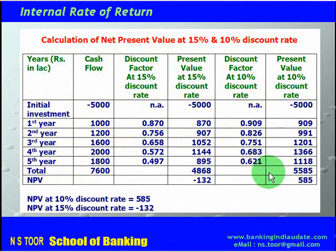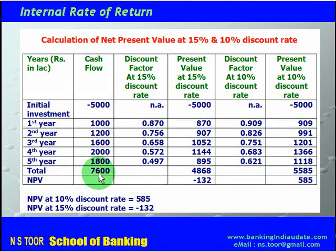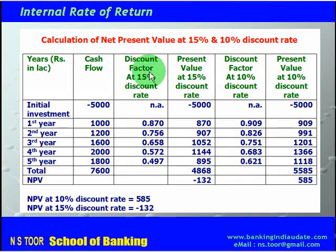We will start with the manual method, discounting the cash inflows at two different discount rates. Here, we have cash outflow shown as negative. The cash inflows are: first year, second year, third year, fourth year, and fifth year, with total cash inflows of 7600. We require the present value of cash flows — only then we can calculate the net present value. We have taken two discount rates: 15% and 10%.